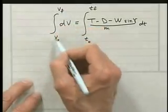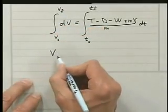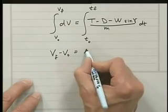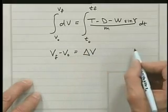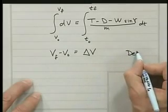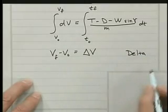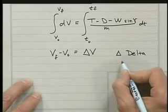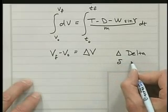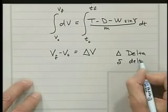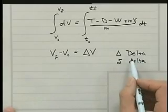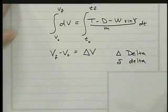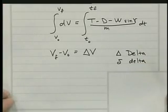On the left we have this integral we can do as vf minus v0, which is called delta v. Delta is a Greek letter. This is the capital delta. Later on we may use lower case delta, which is written like this. I'll always tell you what these Greek letters are as we encounter them, so that you'll know how to pronounce them and how to write them.